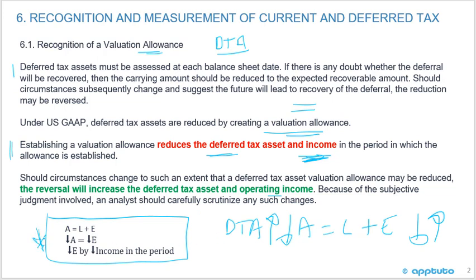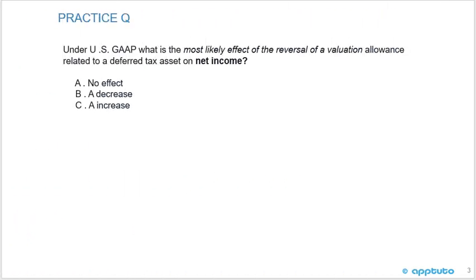This is a pretty easy LOS — an easy concept to understand. We're just going to finish this LOS with one quick practice question. Under U.S. GAAP, what is the most likely effect of the reversal of a valuation allowance related to a deferred tax asset on net income? A, no effect; B, a decrease; or C, an increase?